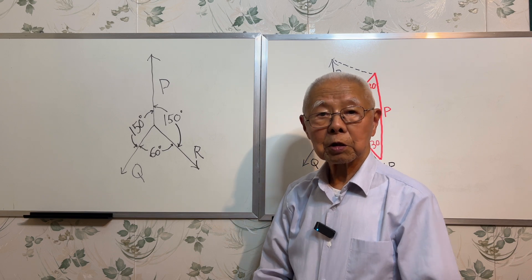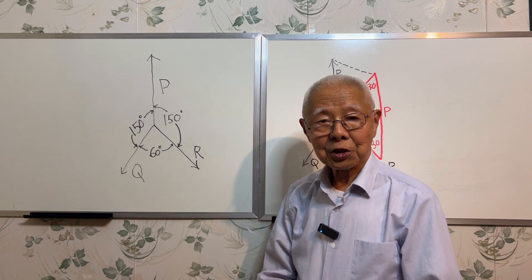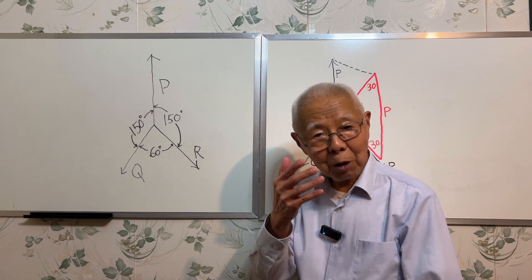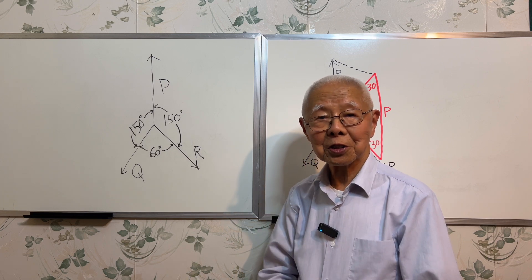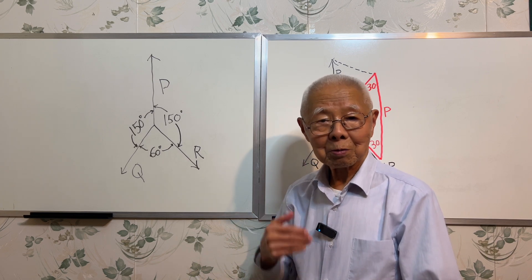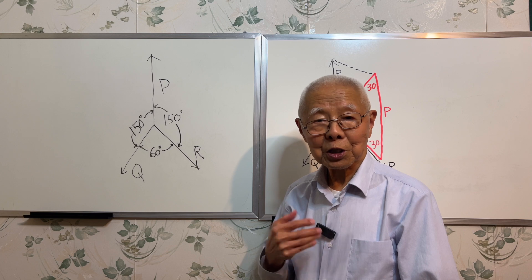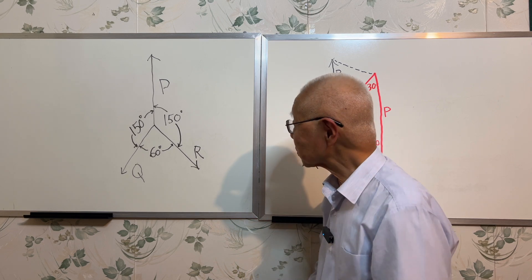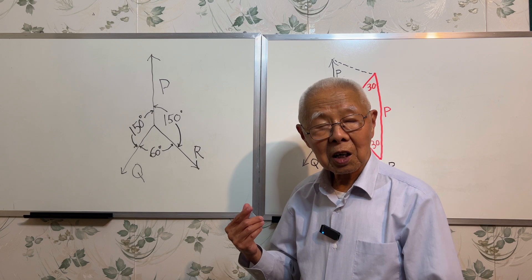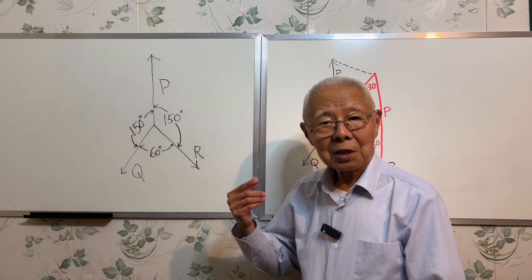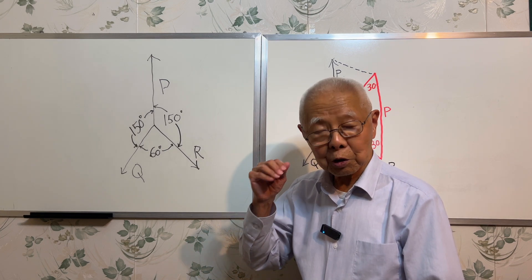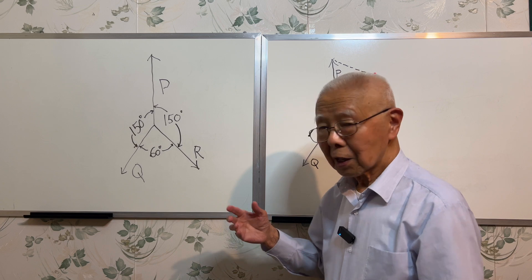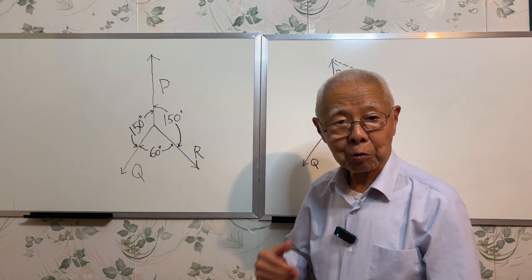In equilibrium means the sum of the three vectors, or the sum of the three forces, is zero — the resultant is zero. Let's draw the condition of equilibrium using another diagram.